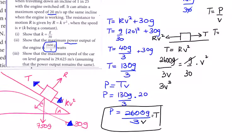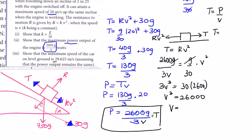Cross-multiplying gives 3v³ equals 30 times 2600. Dividing by 3 gives v³ equals 10 times 2600, which is 26,000. The cube root of 26,000 equals 29.625 m/s, which confirms the required max speed on level ground.